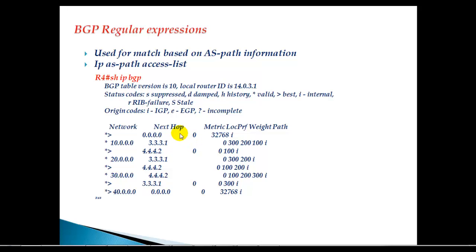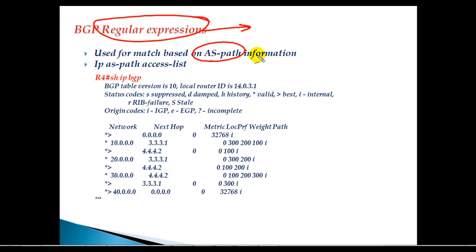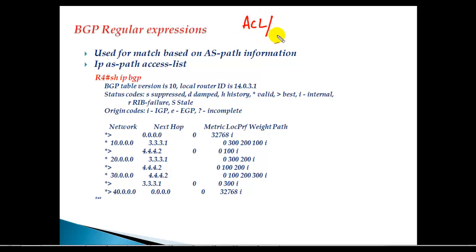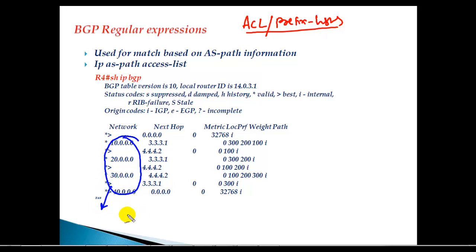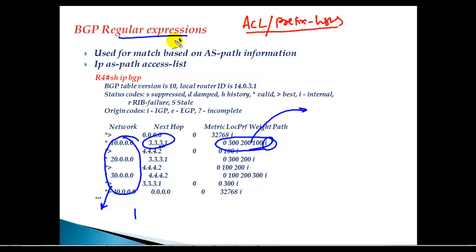BGP regular expressions are more similar to your access list or prefix list statements, but there is a difference. Using BGP regular expressions, it is actually a string of characters which is going to match based on the autonomous system path information, instead of matching based on the prefixes. In previous sections we have seen BGP route filtering where to match any specific network we used ACLs or prefix list statements.